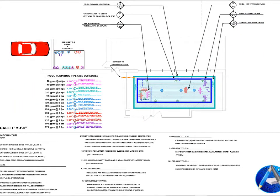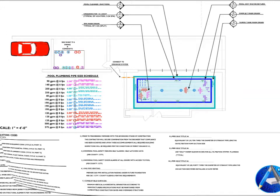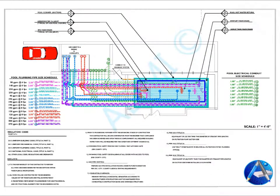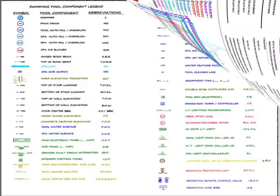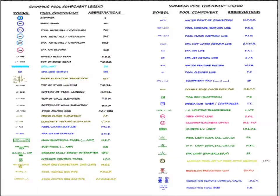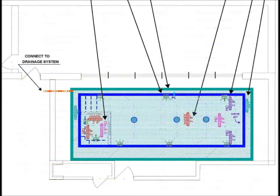Our plans will leave virtually nothing to be assumed during the installation — all that's required is to simply follow the numbers. Each pipe and conduit will have a designated number at the pool's environment and at the equipment pad. All routings are accommodated according to the site-specific practicalities. This information, in combination with our very descriptive symbolized legend, makes building a first-class swimming pool as easy as one, two, three.